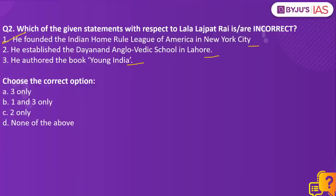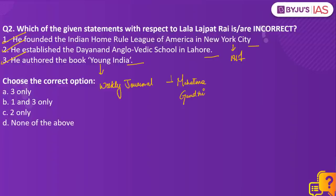Statement one is correct because Lala Lajpat Rai founded the Indian Home Rule League of America in 1917. He was also a follower of Dayanand Saraswati, the founder of Arya Samaj, and became one of the society's leaders. The Dayanand Anglo-Vedic School in Lahore was established by him, so statement two is also correct. For statement three, while the weekly journal Young India was published by Mahatma Gandhi, Lala Lajpat Rai is the author of the book Young India, in which he describes India's political situation in 1915 and the history of India's freedom struggle before 1915.